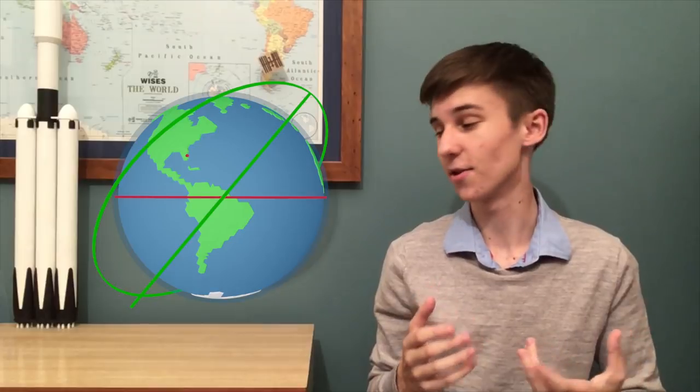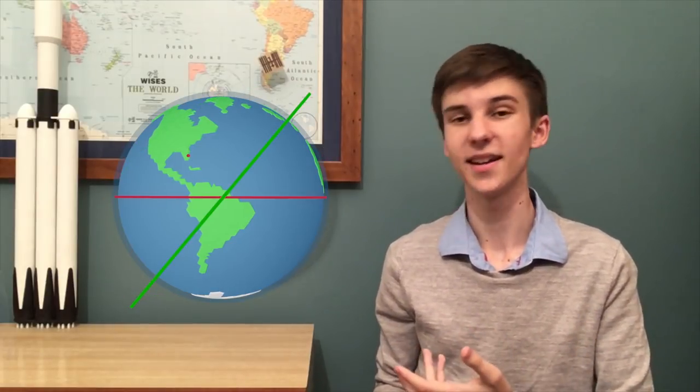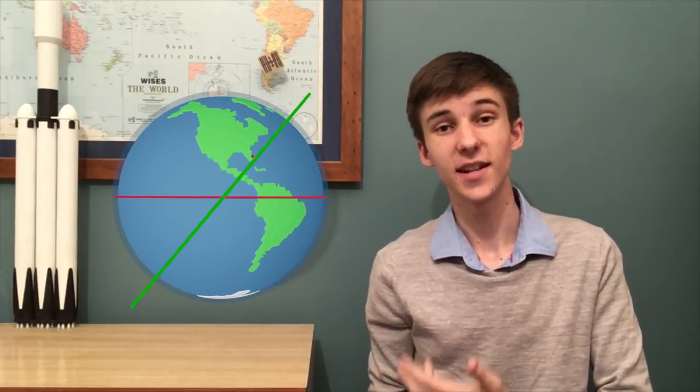So, it's much easier for us to just play the waiting game. Wait for the Earth to rotate in such a way that our launch site is underneath the space station's orbital path. Then we can launch, and our orbit will line up with the International Space Station, and we can begin the rendezvous.